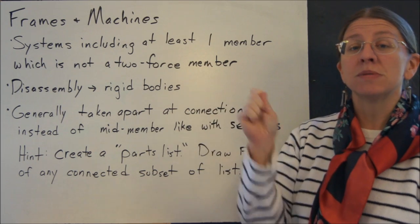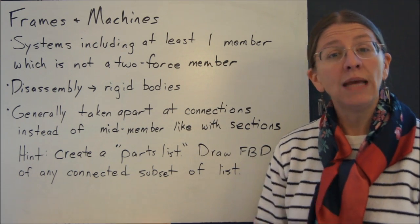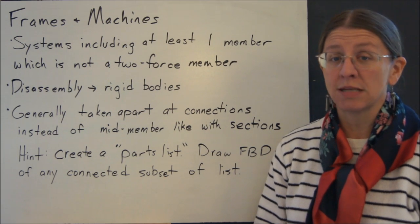Frames and machines are systems that include at least one three-force member. If it only had two-force members, then it would be a truss, because that's what a truss is.